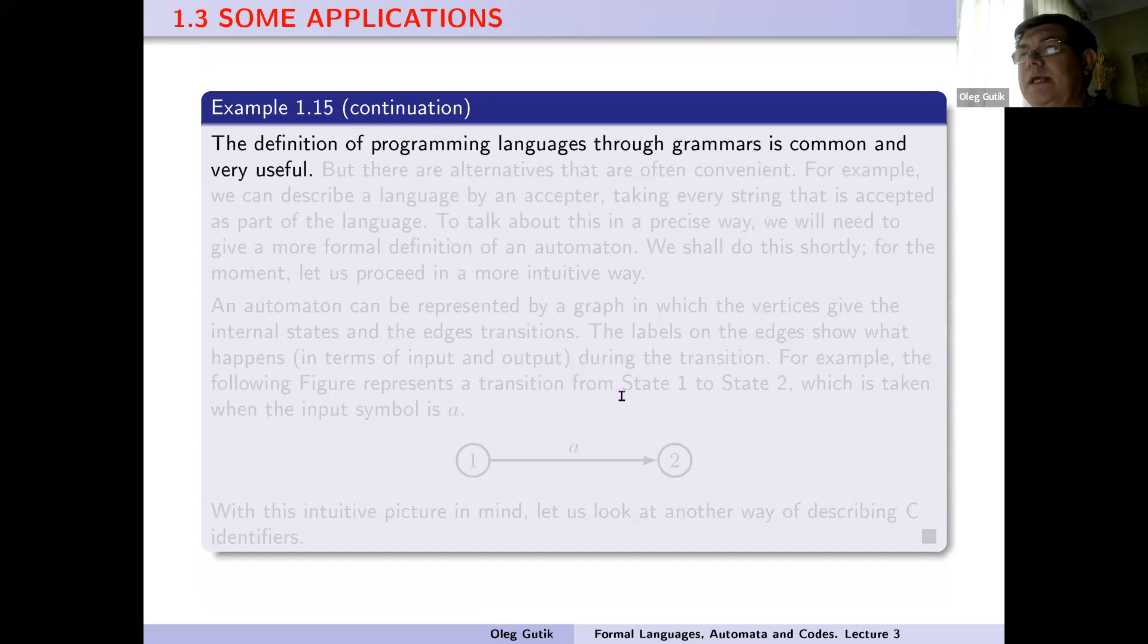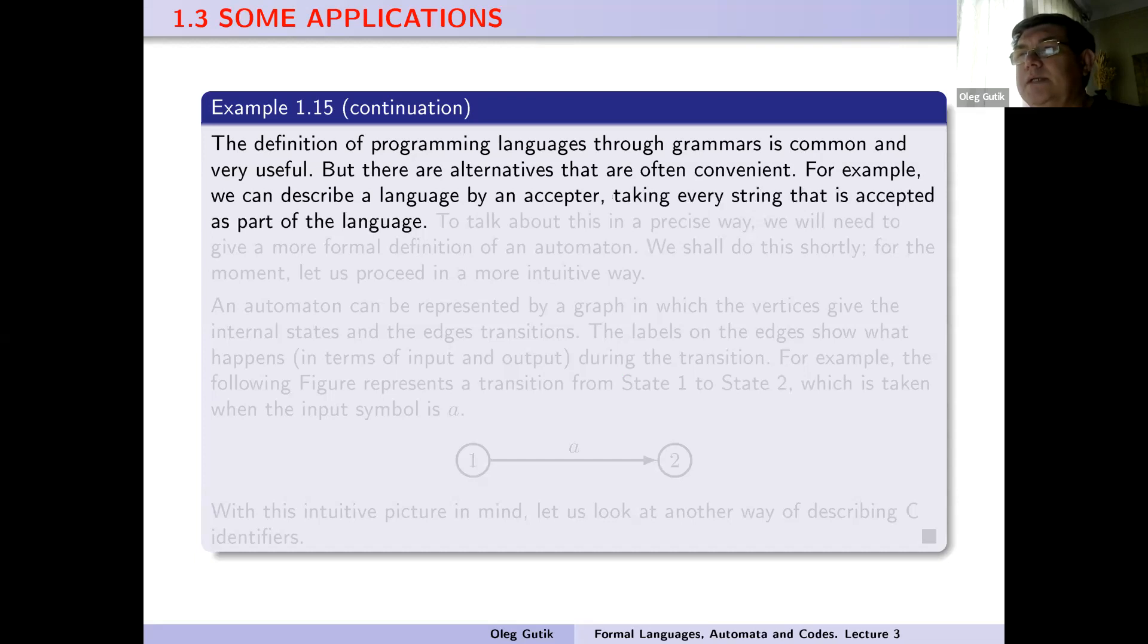The definition of programming languages through grammars is common and very useful, but there are alternatives that are often convenient. For example, we can describe a language by an acceptor, taking every string that is accepted as part of the language. To talk about this in a precise way, we will need to give a more formal definition of an automaton. We shall do this shortly. For the moment, let us proceed in a more intuitive way.